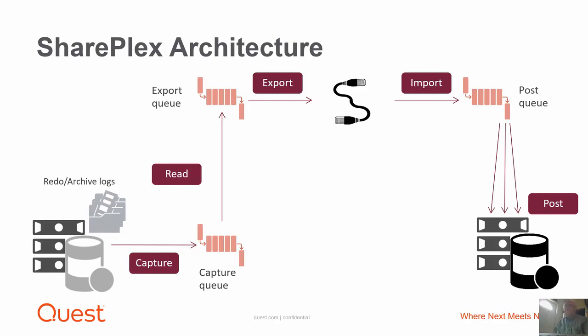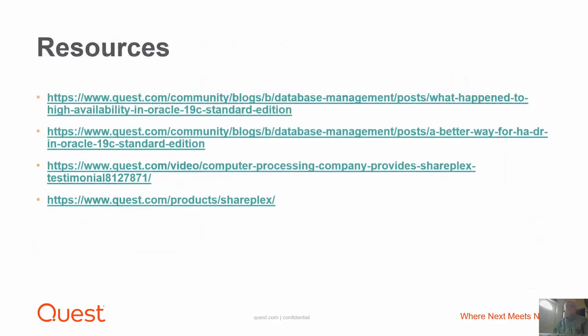So that's how you can have high availability or disaster recovery in Oracle 19c without having to use RAC or Oracle SEHA. One more thing I should mention: when you're doing replication and you have a target database, you're always worried that the target database might not look exactly like the source. Right out of the box, included in the SharePlex package, we give you the compare and repair utilities that will let you compare two tables — the source and the target — and if they're different, we'll give you the SQL to make the target look like the source. So that's how you can alleviate the need for RAC in Oracle 19c Standard Edition. Here are some additional resources you can take a look at. Thank you very much for listening and watching.